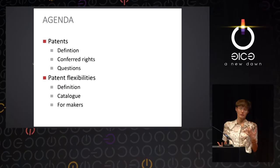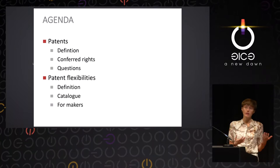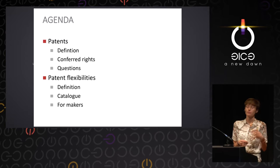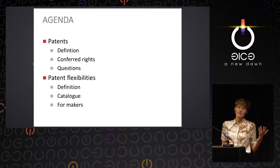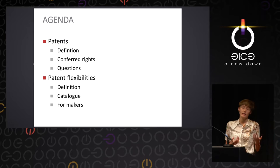My talk will consist of two parts. First, I would like to give you an overview of patents — what patents are, how patents are built. I would also like to explain the rights conferred with patents, and I decided to also highlight questions that are currently debated in the patent system. The second and biggest part of my talk is on patent flexibilities: I will explain what they are, present a catalogue, and then focus on chosen flexibilities that can help you in making.